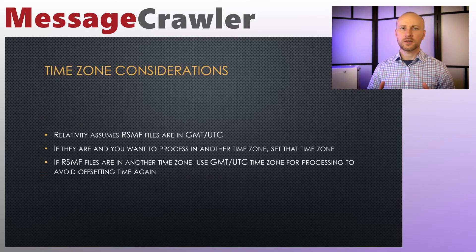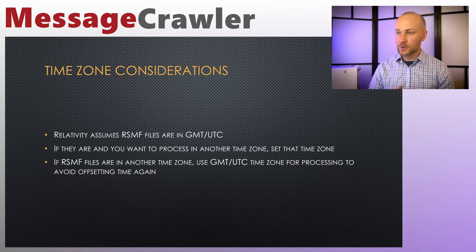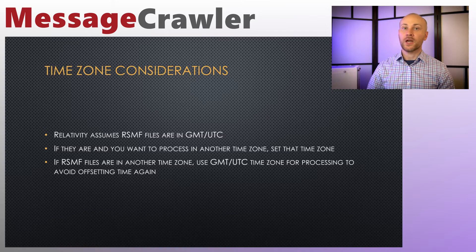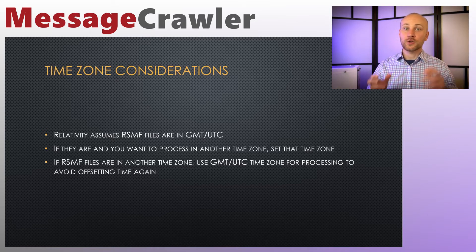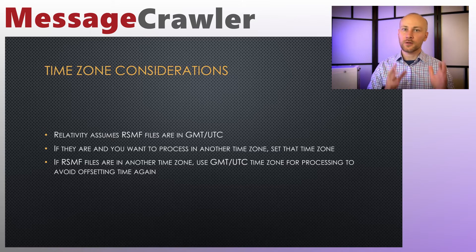Time zone considerations: Relativity assumes RSMF files were created in UTC. If they are, you can process them in UTC/GMT and that works fine. If you want Relativity to offset to a different time zone, you can set that. However, if you already exported your data from forensic software in Eastern time and then set Eastern time in processing, you will offset your documents twice — once during forensic processing and again during Relativity processing. So if your data is already in Eastern time and you want to leave it as-is, set your processing profile to UTC.